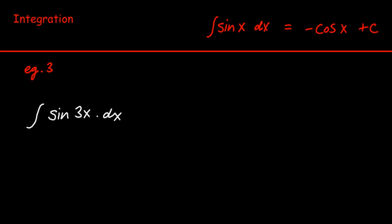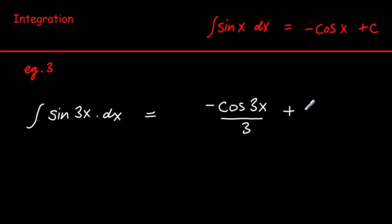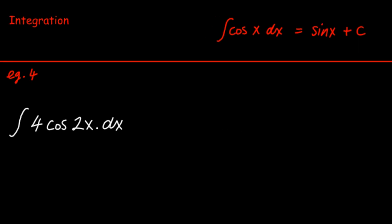Example 3 is an important one. The log tables tell us that the integral of sin x dx is −cos x + C. What about sin 3x dx? This needs to be learned: the answer is −cos 3x divided by 3, and again we add on the constant of integration.